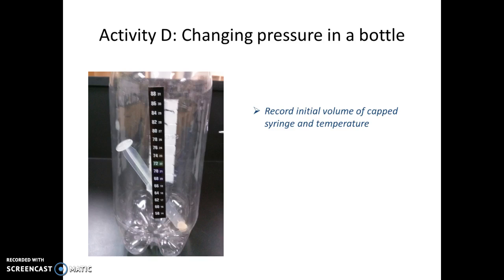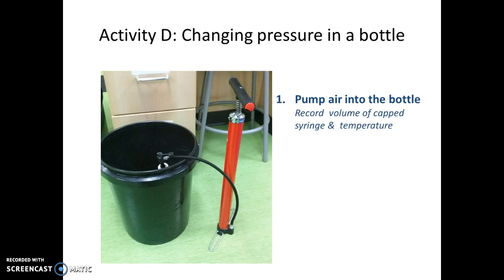Also notice the capped syringe inside the two-liter bottle, which contains an air sample. Record the volume of that air sample trapped in the syringe before you pump air into the bottle. After making these initial observations, hook the soda bottle up to your tire pump. Place the soda bottle in the black bucket and make sure you don't pump more than 20 times.